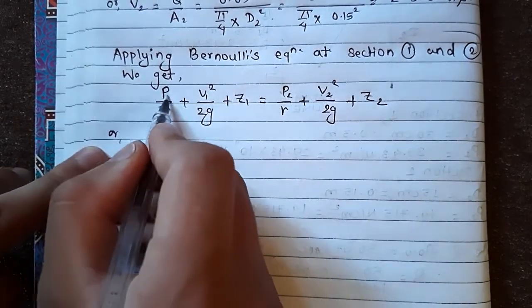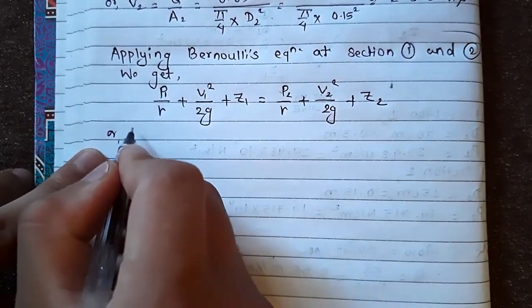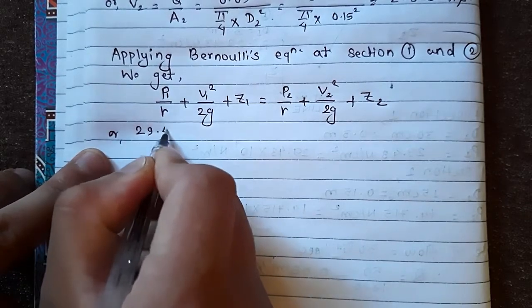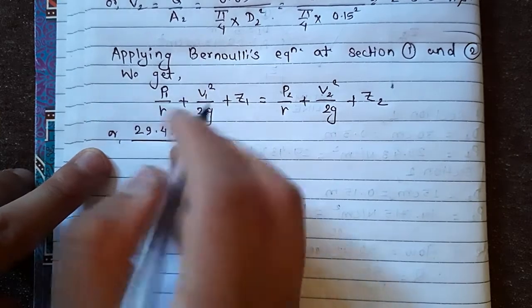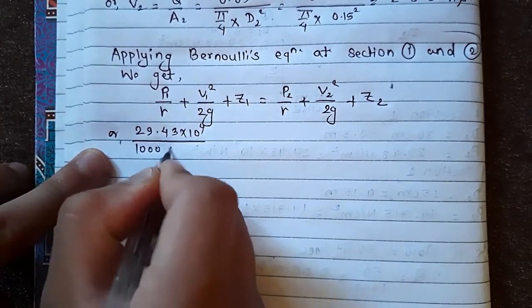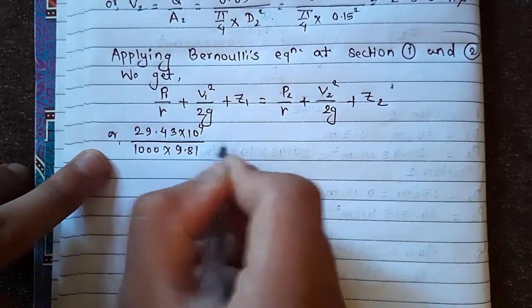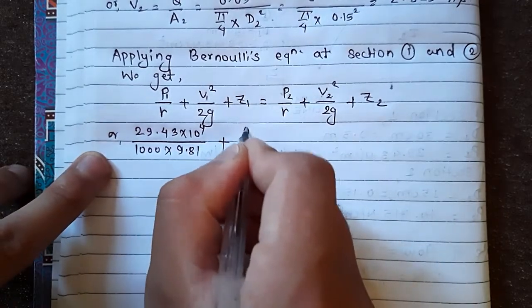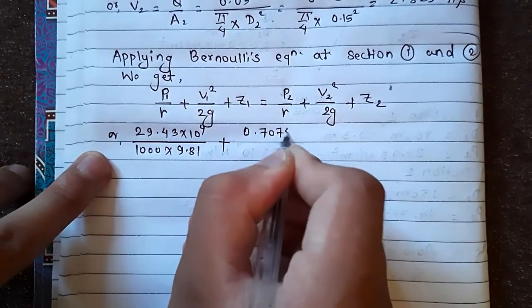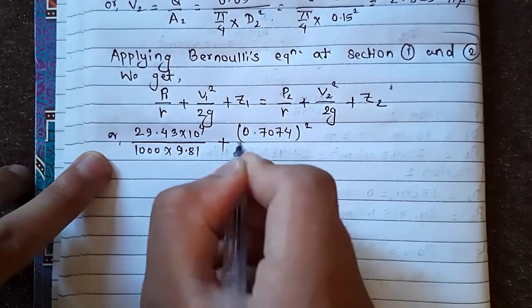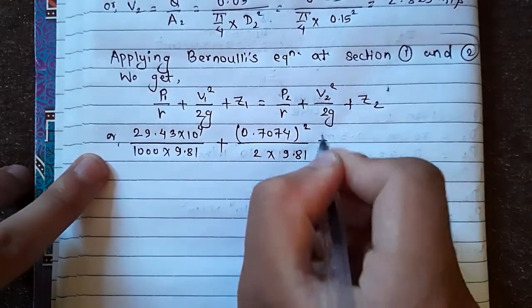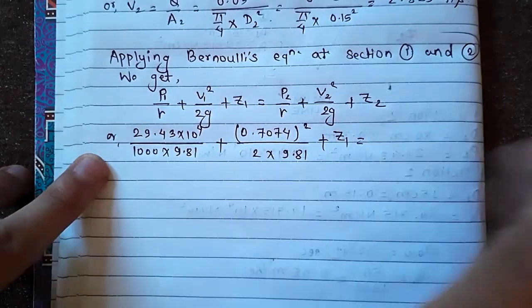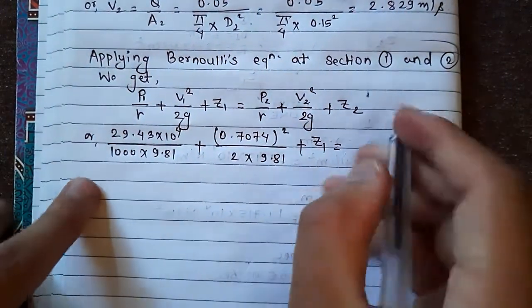P₁ is equal to 29.43 into 10 to the power 4 divided by 1000 into 9.81 plus V₁ is equal to 0.7074 square divided by 2 into 9.81 plus Z₁